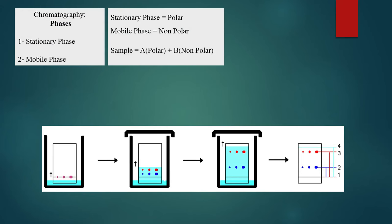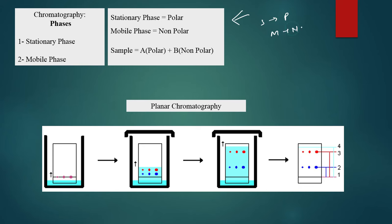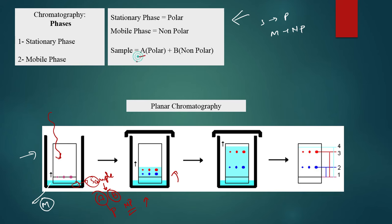Now let's talk about planar chromatography. The same concept applies — stationary is polar, mobile is non-polar. In planar chromatography, we use a beaker with a mobile liquid solvent. We have a stationary card or plate which is the stationary phase. Capillary action causes the components to flow up the plate. We have components A and B — A is polar, B is non-polar.